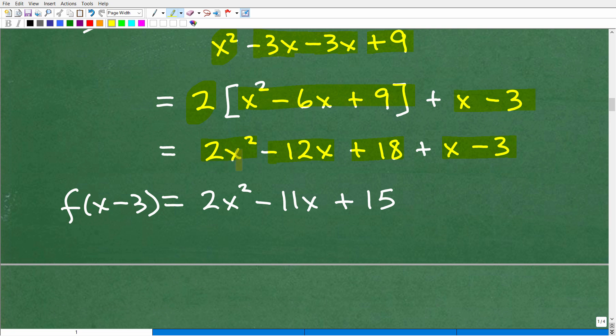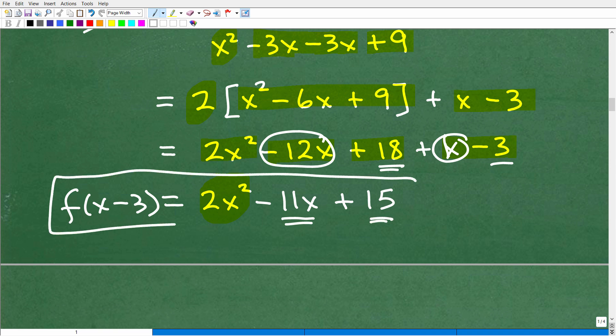And now let's just put this all together. So like terms, I only have one x squared term. So that's 2x squared. I have negative 12x. I have another x over here. That's a positive 1x. So it's negative 11x. And then I have my 18 minus 3, which is 15. So finally, this is the right answer. f of x minus 3 is equal to 2x squared minus 11x plus 15. This is what you would want to give your teacher.